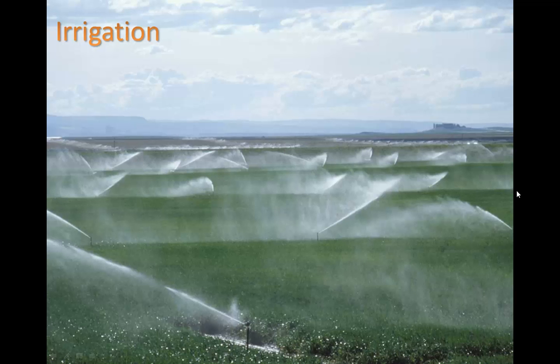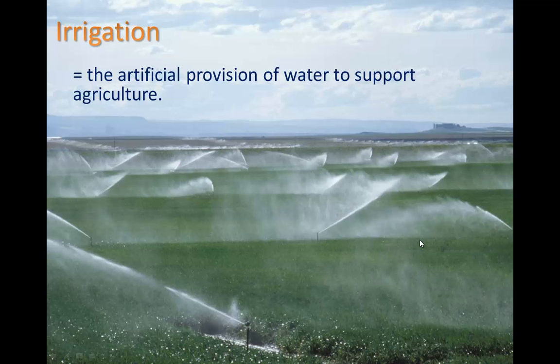Thanks for tuning in for part two. Irrigation, if not done properly, can lead to soil degradation. Let's take a look at some of that. First of all, the definition for irrigation: the artificial provision or acquisition of water to support agriculture.